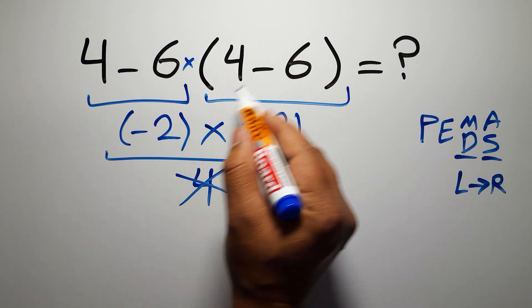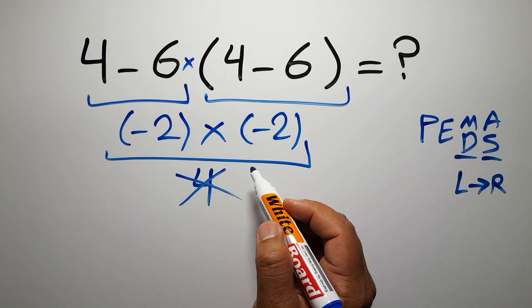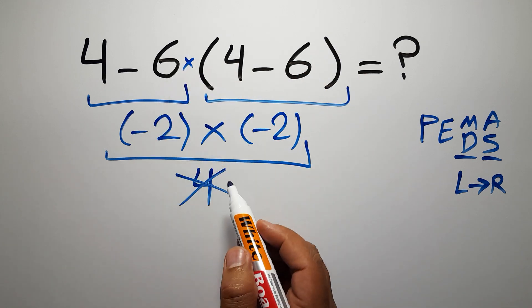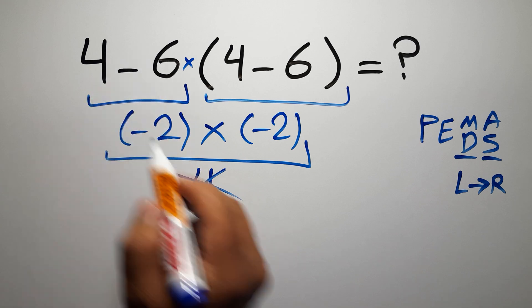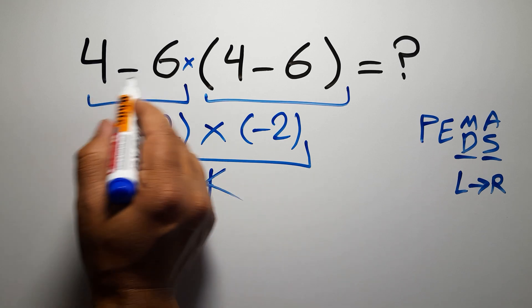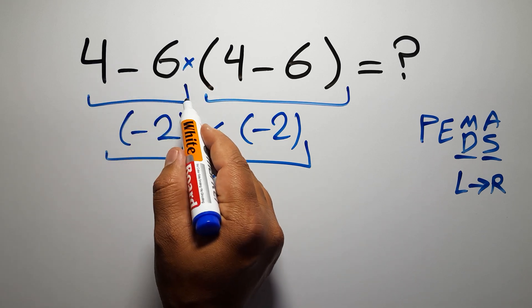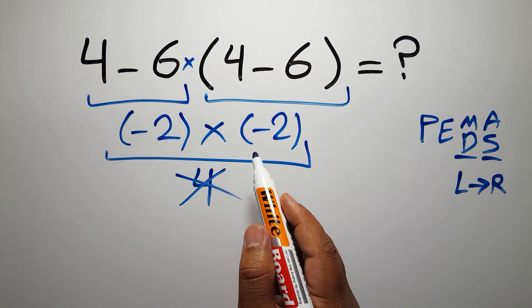So therefore, first we have to do this parenthesis, then this multiplication, and finally this subtraction. If you do this subtraction before this multiplication or this parenthesis, it is wrong.